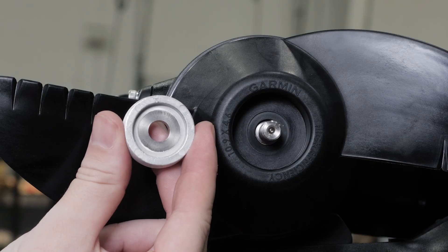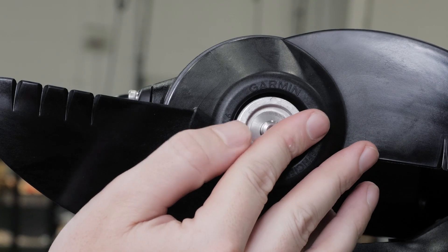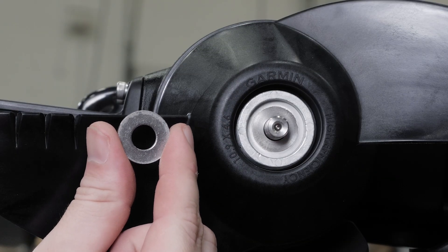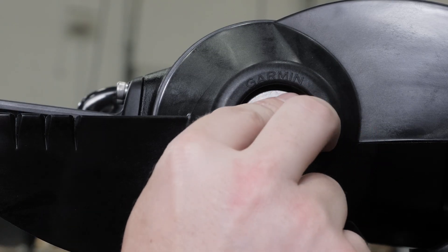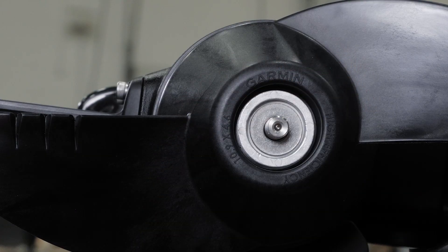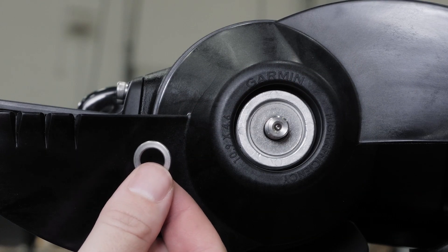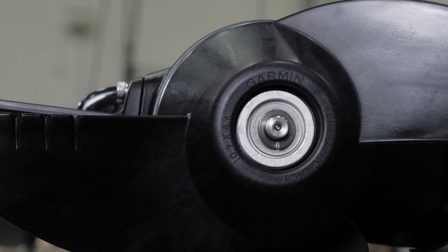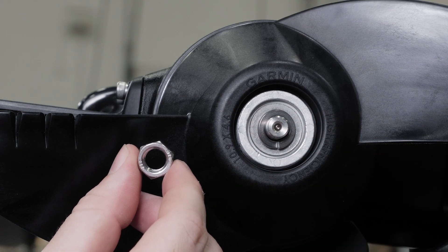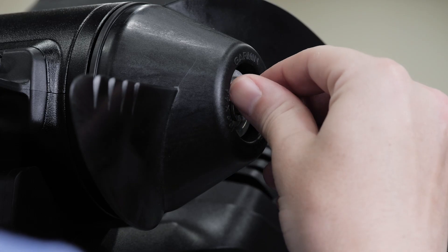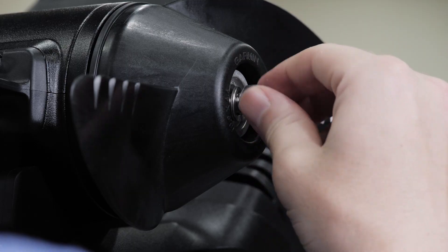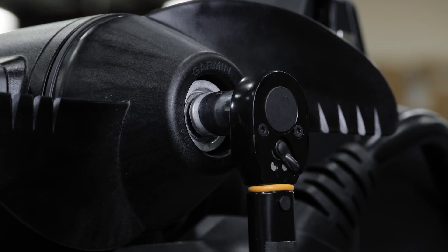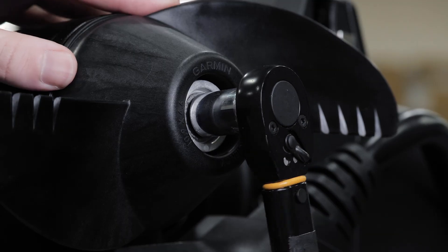Now place the anode, washer, lock washer, and nut onto the end of the motor shaft. Tighten the lock nut to 6 foot pounds to secure the propeller using a 14 millimeter socket.